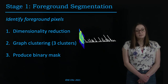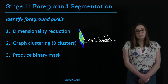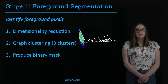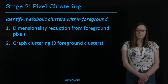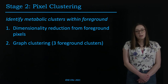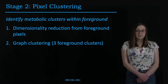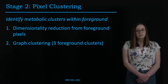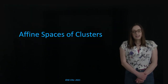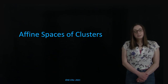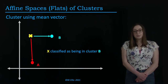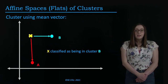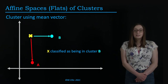In a DESI image, even background pixels produce a mass spectrum, making identification of foreground pixels non-trivial. We propose the use of dimensionality reduction and graph clustering to ultimately produce a binary mask of foreground versus background. The next stage is pixel clustering. The goal here is to identify metabolic clusters within the foreground only. Again, we use dimensionality reduction and graph clustering, but on only foreground pixels to identify three foreground clusters.